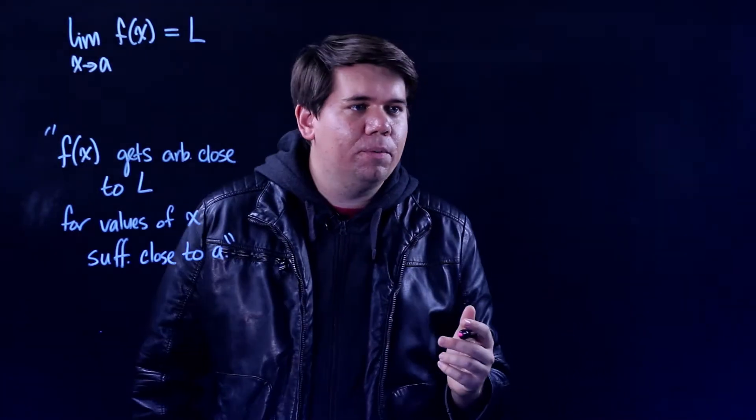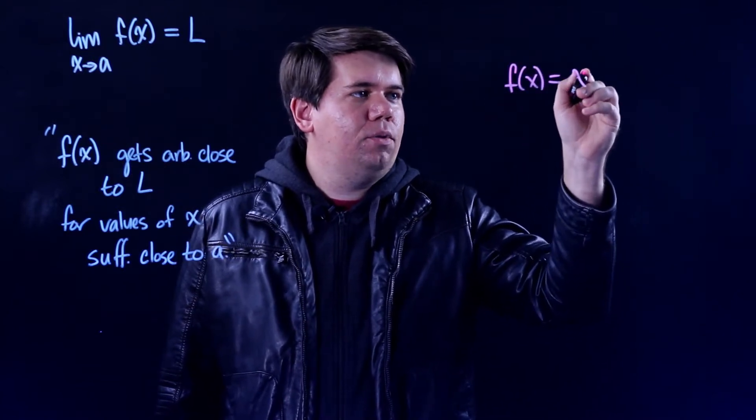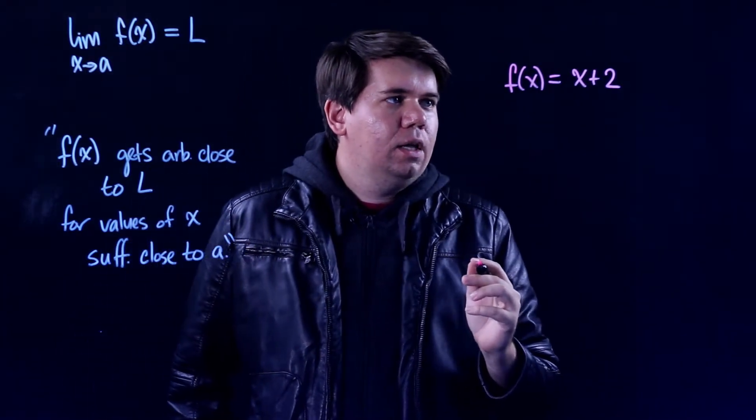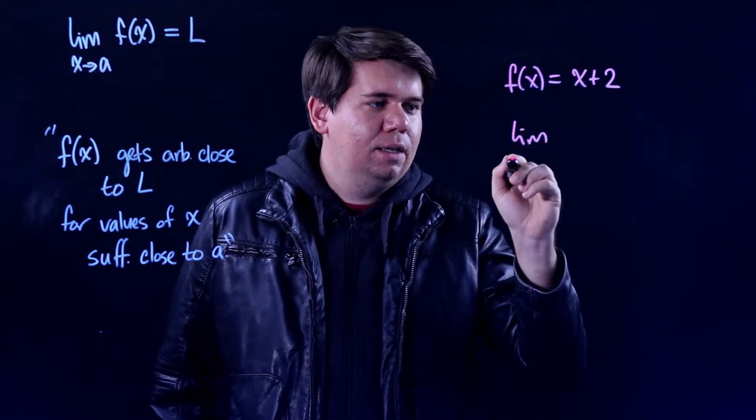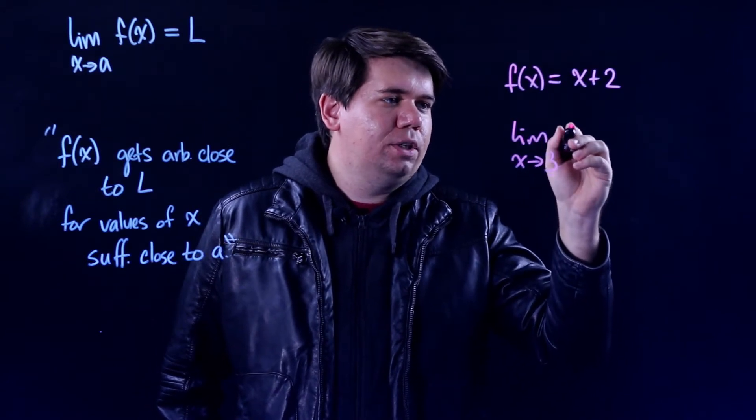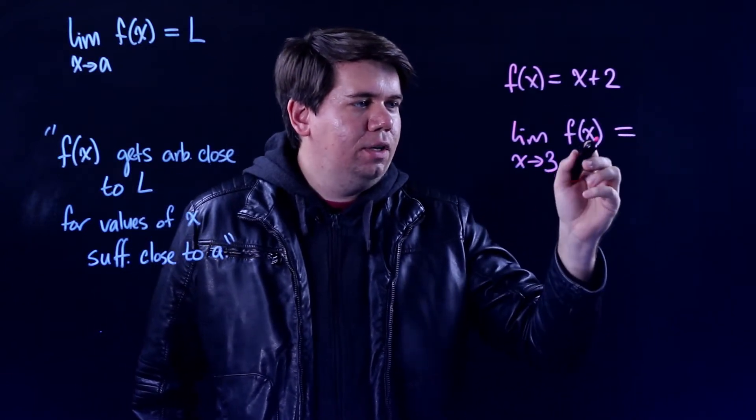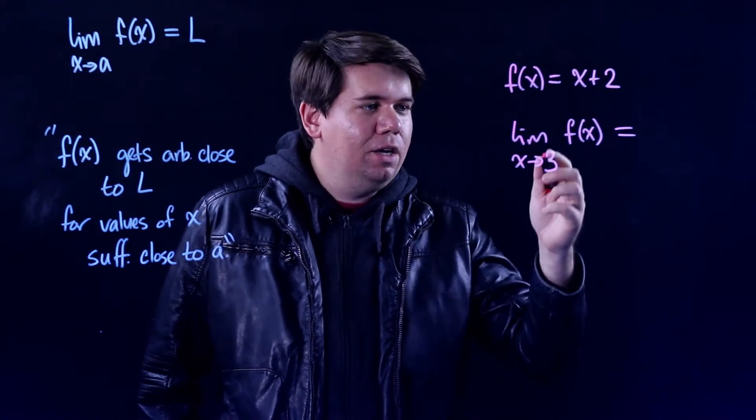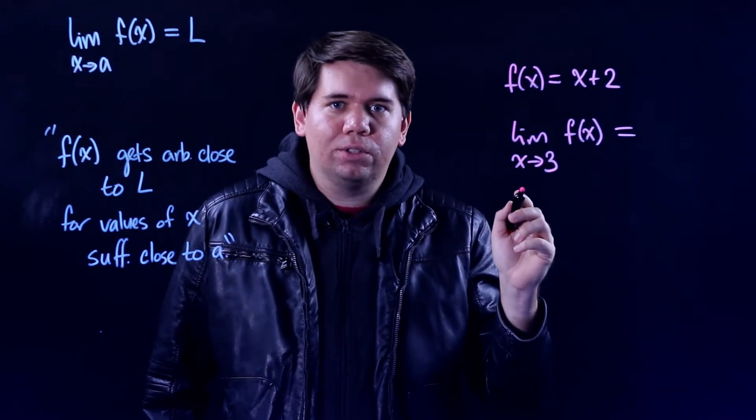Let's make sense of this with an example. Consider the function f(x) is equal to x plus 2. Now let's pick a limit like the limit as x approaches 3 of your function. So this is asking what is your function approaching as x approaches 3, or more precisely, what values your function get arbitrarily close to as x gets closer and closer to 3.